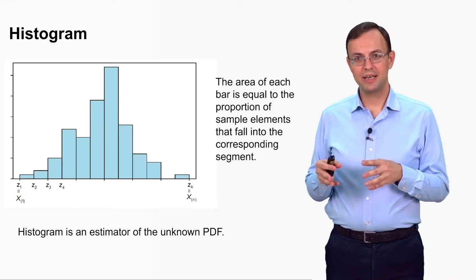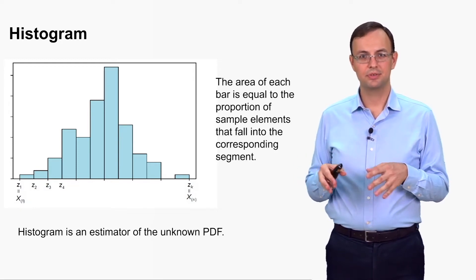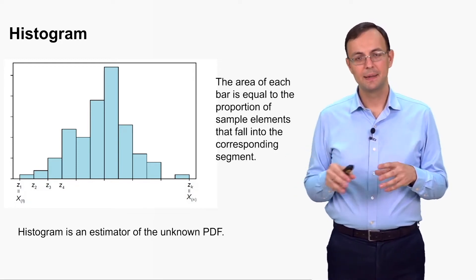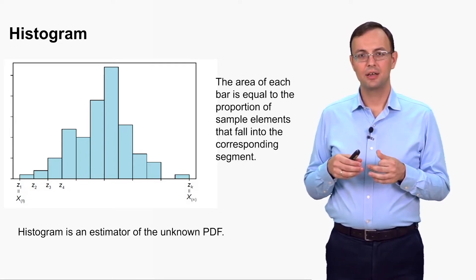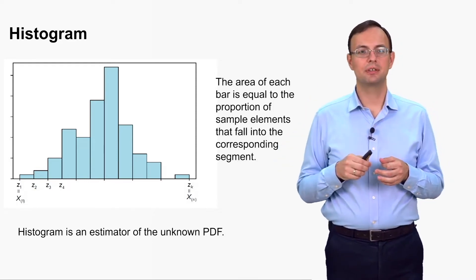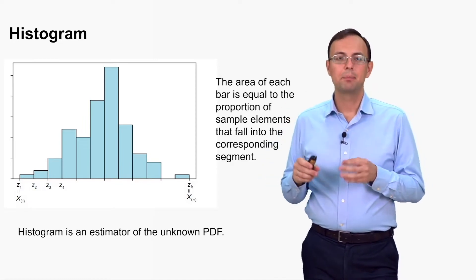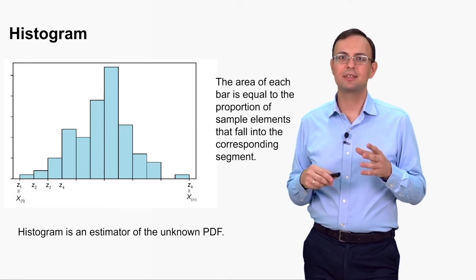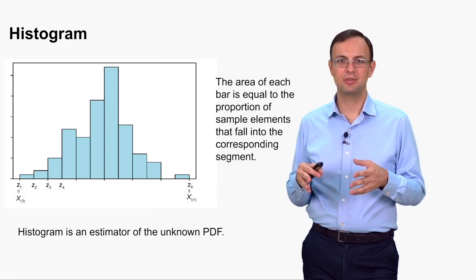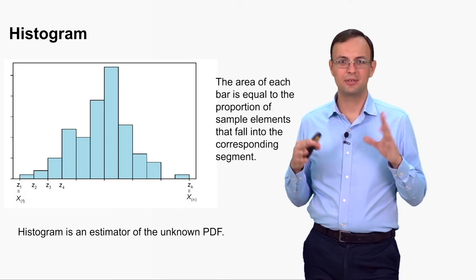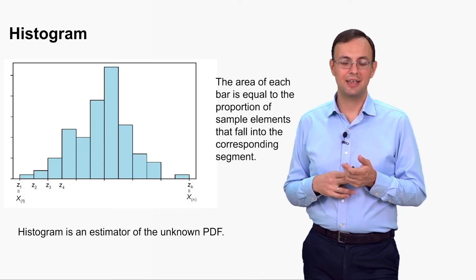There is another way to estimate an unknown PDF called a kernel density estimator (KDE). It is more accurate because it produces a smooth curve rather than a bar chart. This method is more mathematically complex, so if you are interested, look it up in statistics textbooks under 'kernel density estimator.'